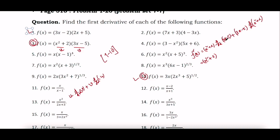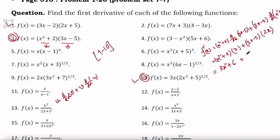The derivative of (3x minus 5) is 3, plus (3x minus 5) into the derivative of x squared which is 2x, plus the derivative of 2 which is 0. This equals 3x squared plus 6 plus 6x squared minus 10x, which equals 9x squared minus 10x plus 6.